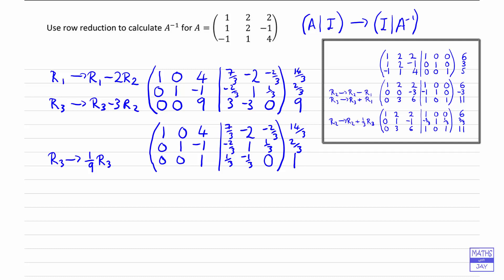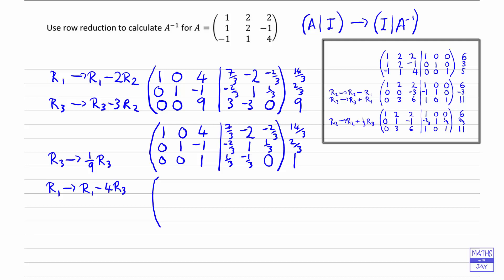So now we've reached the last stage, because all we need to do is to make the last column read 0, 0, 1. Row 3 is fine — we just need to change row 1 and row 2. For row 1, instead of 4, we want a 0, so we need to take away 4 times row 3. And for row 2, instead of the minus 1, we want a 0, so we just add on row 3. So for the first row: 0 added to 1 gives 1; 0 again stays 0; and the 4 will change to a 0 when we subtract 4 from that.